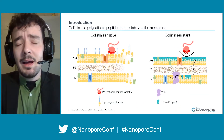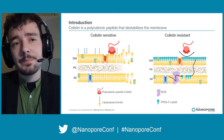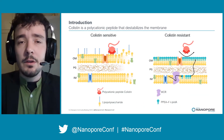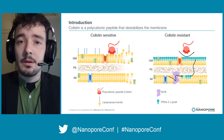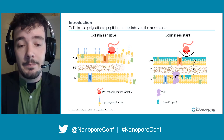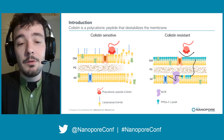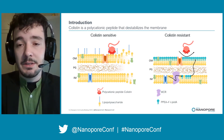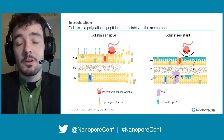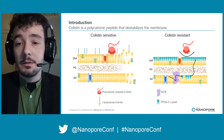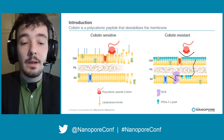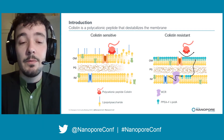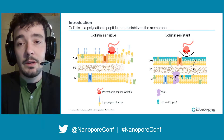But how does colistin act? Colistin is a polycationic peptide that destabilizes the membrane of gram-negative bacteria. However, some bacteria present MCR genes, which code for transmembrane proteins that modify lipopolysaccharides. This modification prevents colistin action.